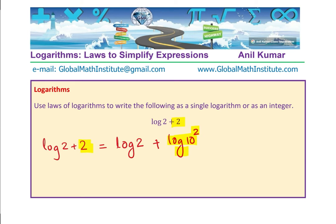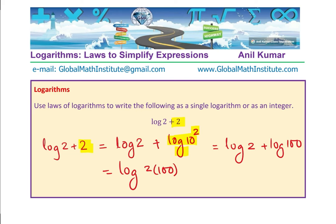Log base 10 of 2 plus log of 100 — multiplying them gives log base 10 of (2 × 100), which is log base 10 of 200. It looks simple when you see the solution, but in a test paper this could be a difficult question.